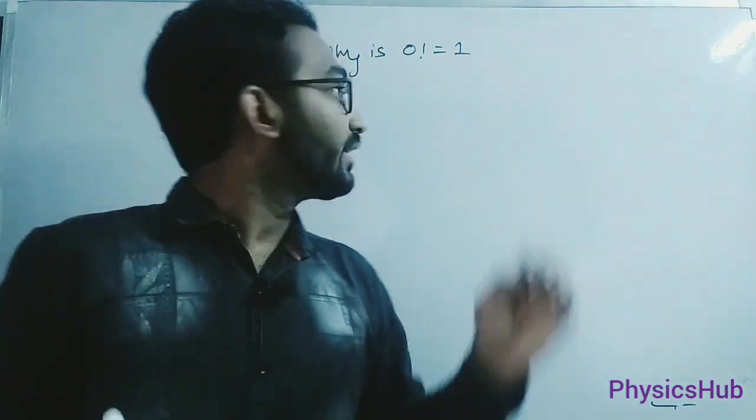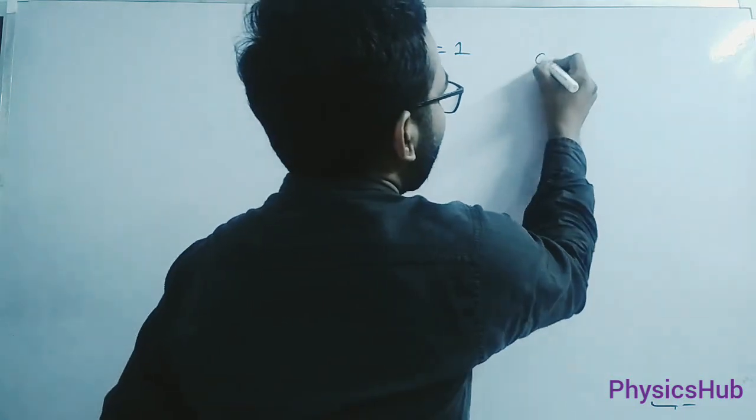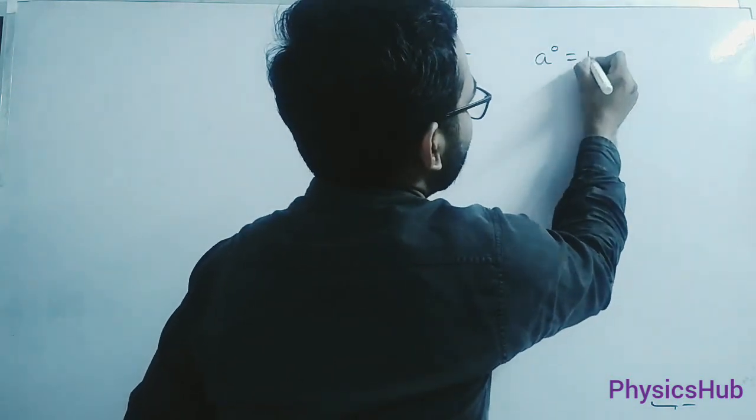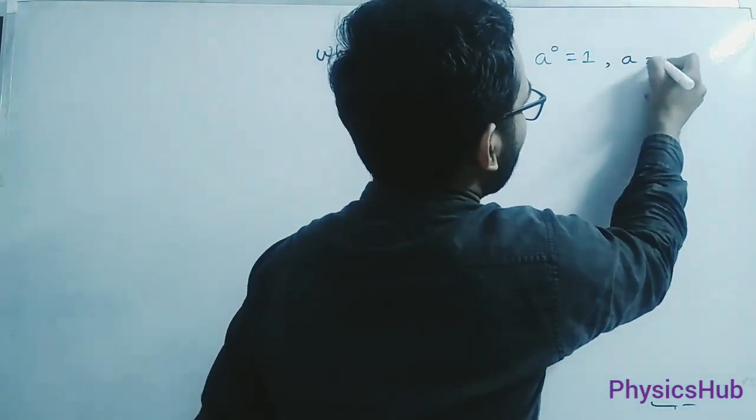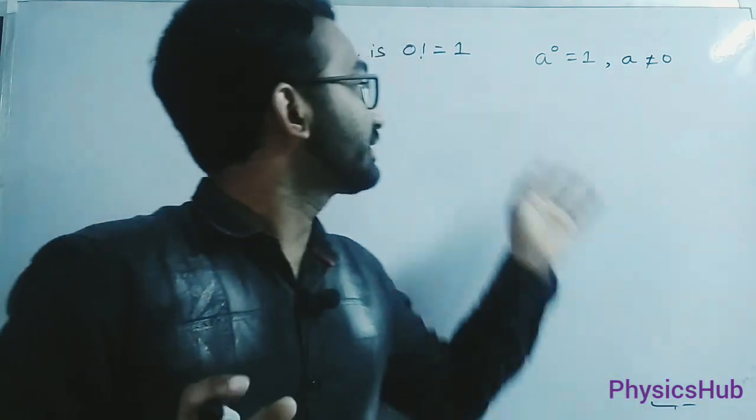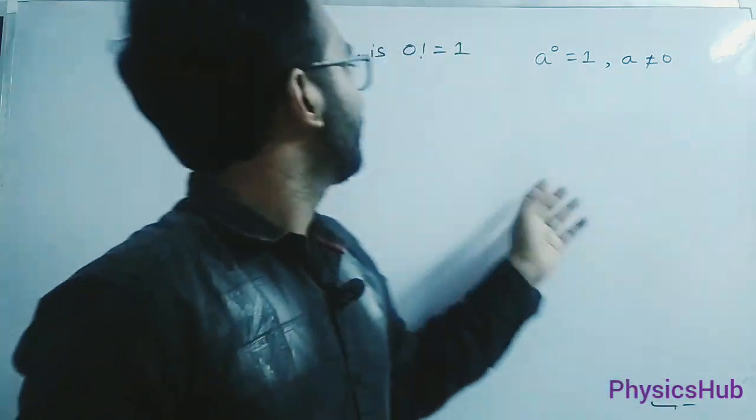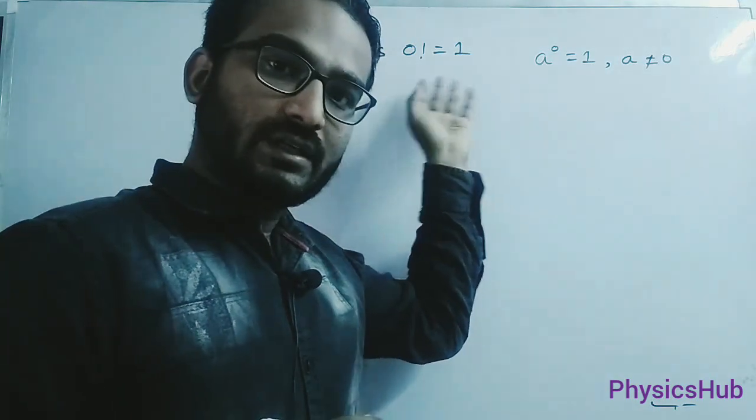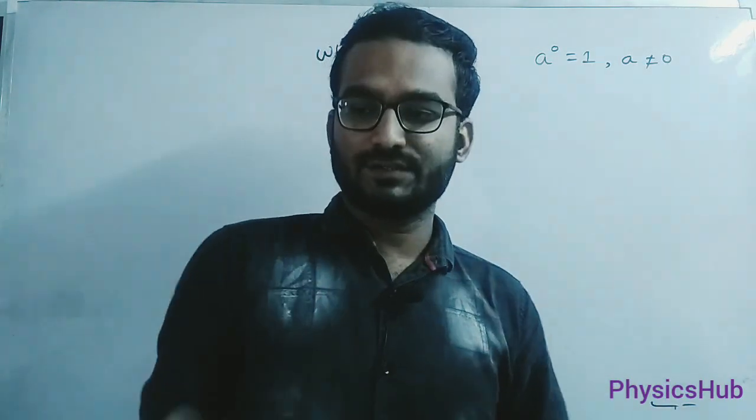Before going to explore this, let me tell you something. If I say a to the power 0 equals to 1 where a is not equal to 0, then you don't have any problem to accept this fact that a to the power 0 will give you 1. But when I am saying 0 factorial equals to 1, then you have some doubt. Why it is so?